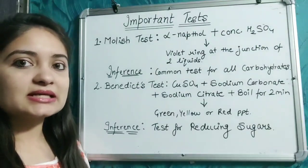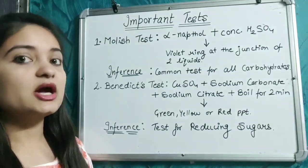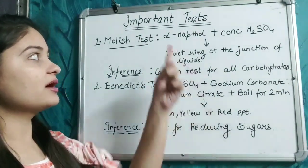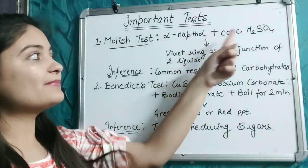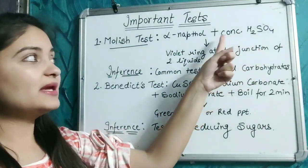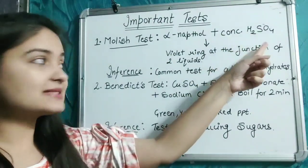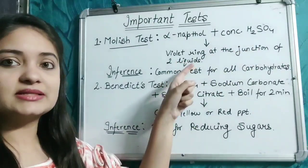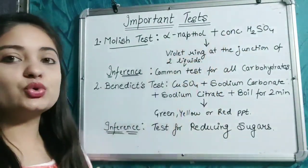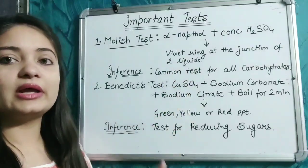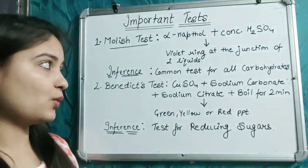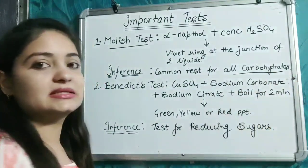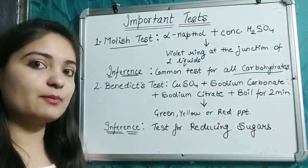Now let's discuss some important tests for carbohydrates. The first is the Molisch test, in which the reagents are alpha-naphthol combined with concentrated H₂SO₄ (concentrated sulfuric acid). This gives a violet ring at the junction of the two liquids. The Molisch test is common for all carbohydrates.